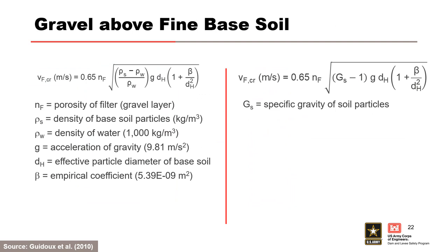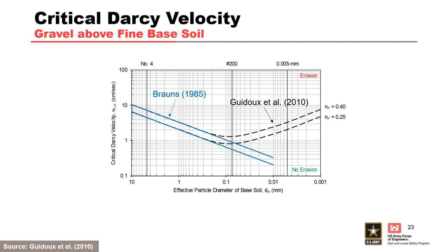The Guido et al. equation for critical Darcy velocity for fine soil, including sands, silts, and sand-clay mixtures, is shown on this slide. The equation uses the critical Froude number of 0.65 from the Bronze methodology instead of a coefficient of 0.7 referenced in the Guido et al. methodology; this is done for conservatism. The Guido et al. methodology can be used for sands as well as silts and sand-clay mixtures below gravel. The Bronze methodology is shown as a blue line for reference and should be used for simplicity for sands below gravel, as it is equivalent to the Guido et al. methodology within the range of applicability.